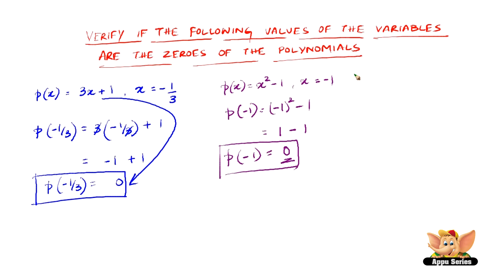Let us do another one quickly. p of x equals x squared where x equals 0. This should be very simple because x is 0 and we just got one term as x squared.